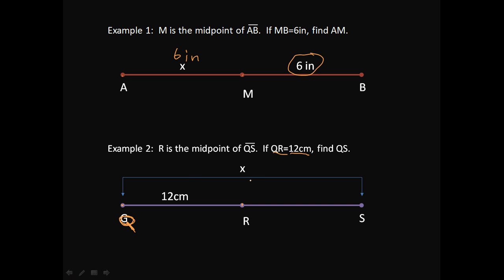So how long is X? Well, we know that this is 12 from Q to R. And then we also know if R is the midpoint, that we have another 12 centimeters over here. So that means that the whole length of QS is going to be 12 centimeters plus 12 centimeters or 24 centimeters. So it's a little trick here, but it's the same idea. We know that this side is the same length as this side. So that means the total all the way across must be 24 centimeters.